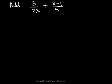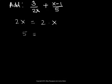The denominators of the rational expressions in the given problem are 2x and 5. Let us find their least common denominator. First, factor each denominator completely. So 2x will be written as 2 times x, and 5 stays as 5 since it is a prime number. We have now written each denominator as a product of prime factors.